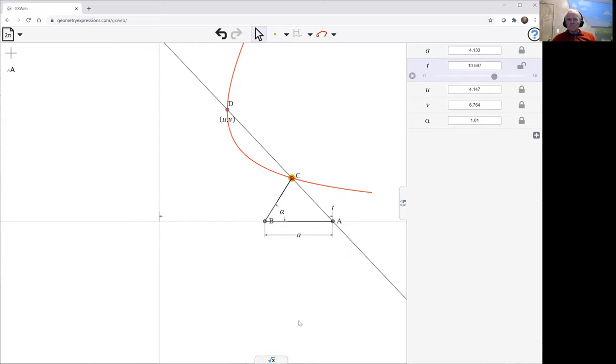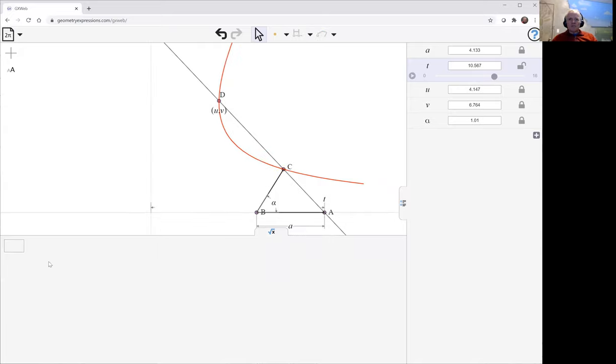So let's use our symbolic panel down here to have a look at the equation of the curve. We've got something with sine and cosine of alpha in it, that's the expected angle in there, but we've got y, x times y and y squared. So that is the equation of a conic section and it certainly looks like a hyperbola there.